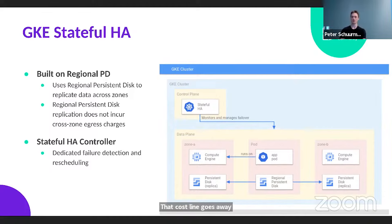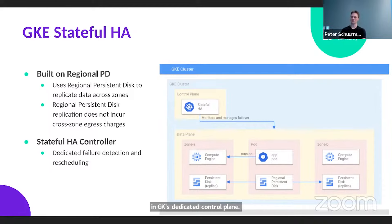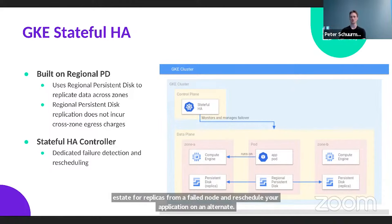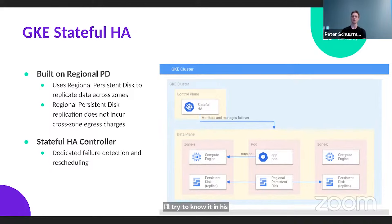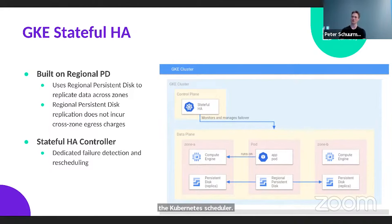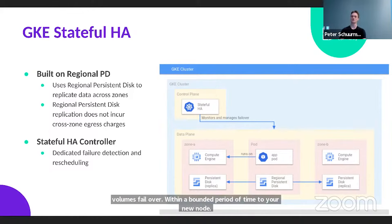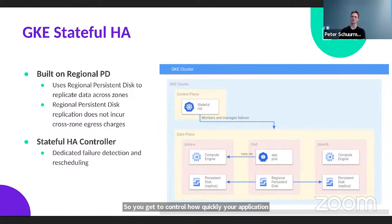The other building block is that the Stateful HA Controller runs in GKE's dedicated control plane. It is able to detect node failure, evict your stateful replicas from a failed node, and reschedule your application on an alternate node in a different zone. Working alongside the Kubernetes scheduler, it ensures your application's regional persistent disk-backed volumes fail over within a bounded period of time, so you get to control how quickly your application replicas get rescheduled after a node failure.